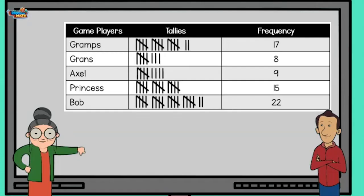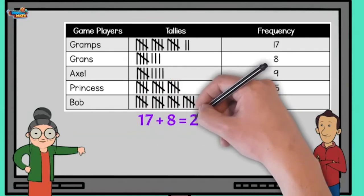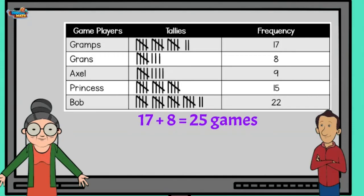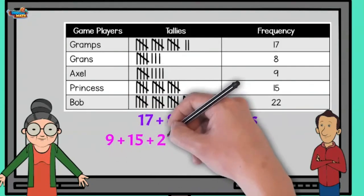To find this out, we have to first add the amount of games you and Gramps won. We add 17 plus 8 and get 25 games. Not so shabby if I do say so myself. Now we add the grandkids' scores. 9 plus 15 plus 22 for a total of 46 games.